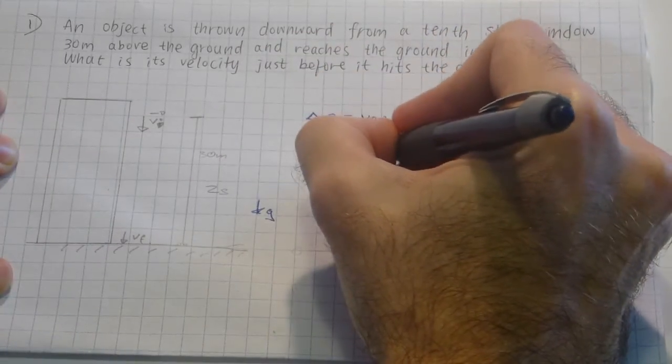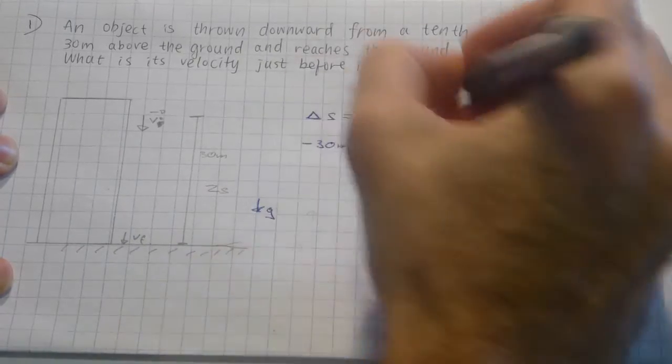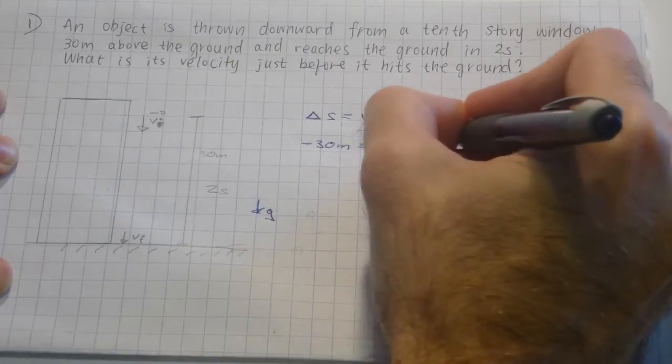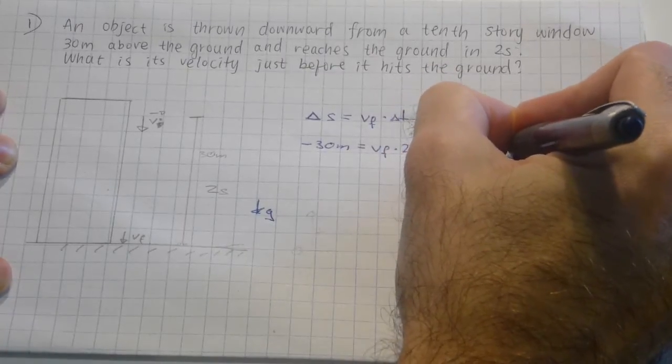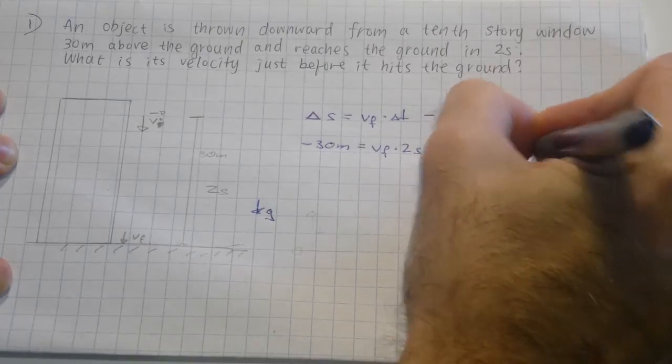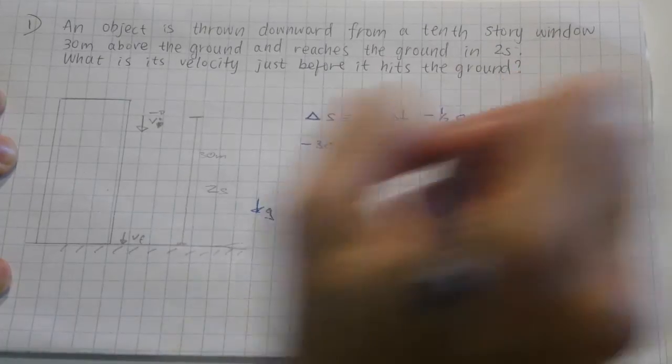With v-final times 2 seconds—we don't know the v-final yet—minus one-half a times delta-t squared times 2 seconds squared gives 4 seconds squared.